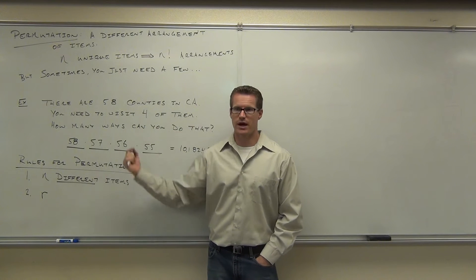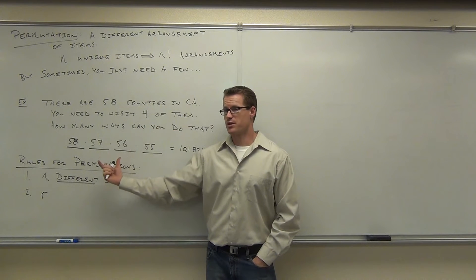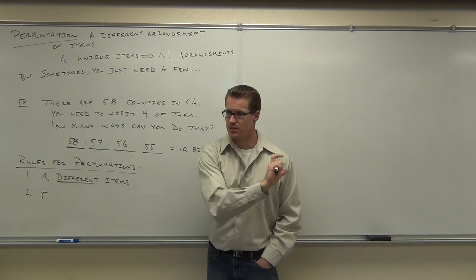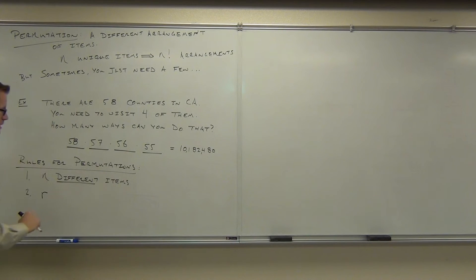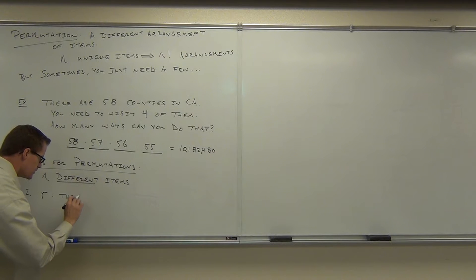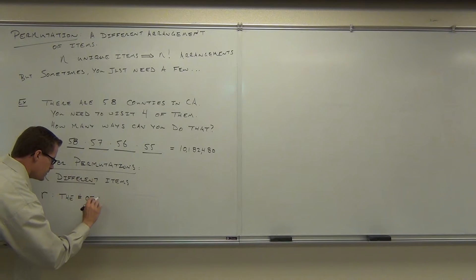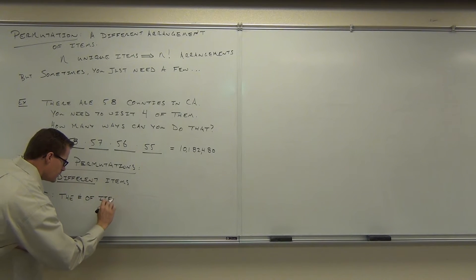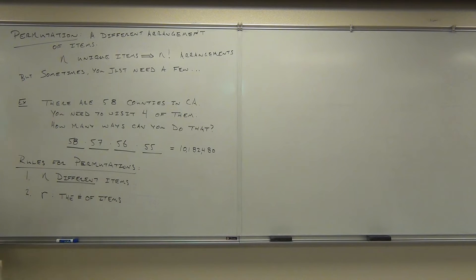So, n is the total number of different items. R is the number that you're selecting to arrange. That's the idea. So, R would be the items selected out of n. The number of items to be arranged out of n.